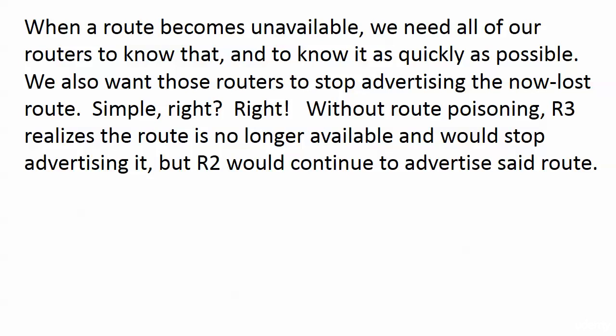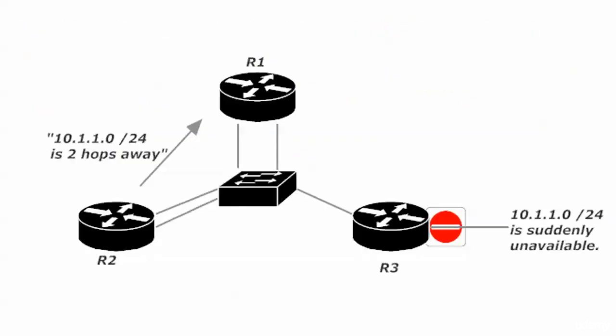Just as a quick reminder, what I'm showing you next is without route poisoning. What would happen is router 3 says, 10.1.1.0/24 is unavailable, I'll stop advertising it. The problem is that doesn't do anything about the entry in router 2's routing table. Router 2 is just going to keep telling everybody — in this case router 1 — that it knows where 10.1.1.0/24 is, and it's two hops away, even though the network is now unavailable.